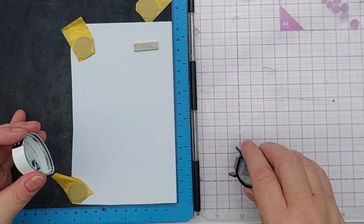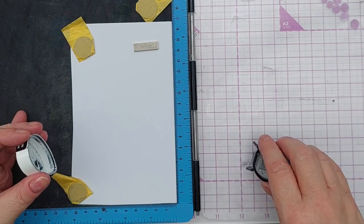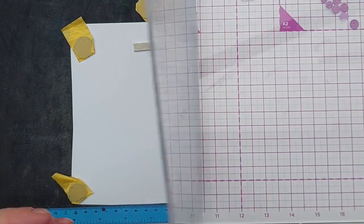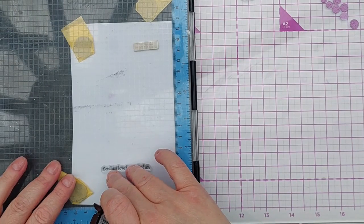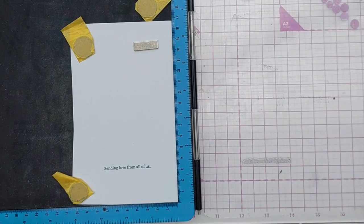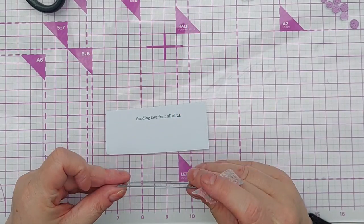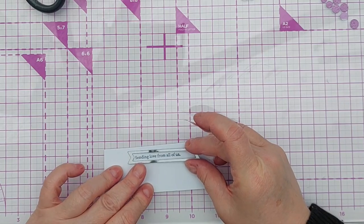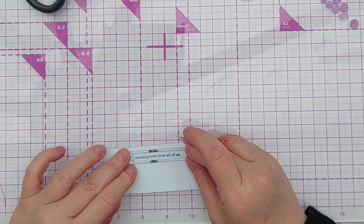For my sentiment, I've got a little stamp that says sending love from all of us. I'm stamping it in black ink on white card. That's come out fine. I'm going to cut this out using my stitch banner die. It's a bit long, so we'll just shorten it.